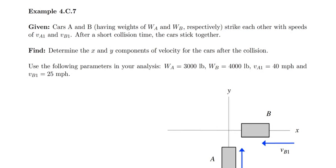In this problem, we have two cars A and B with weights WA and WB respectively, which strike each other at speeds VA1 and VB1. After a short collision time, the cars stick together. We're asked to determine the x and y components of the velocities of the cars after collision.